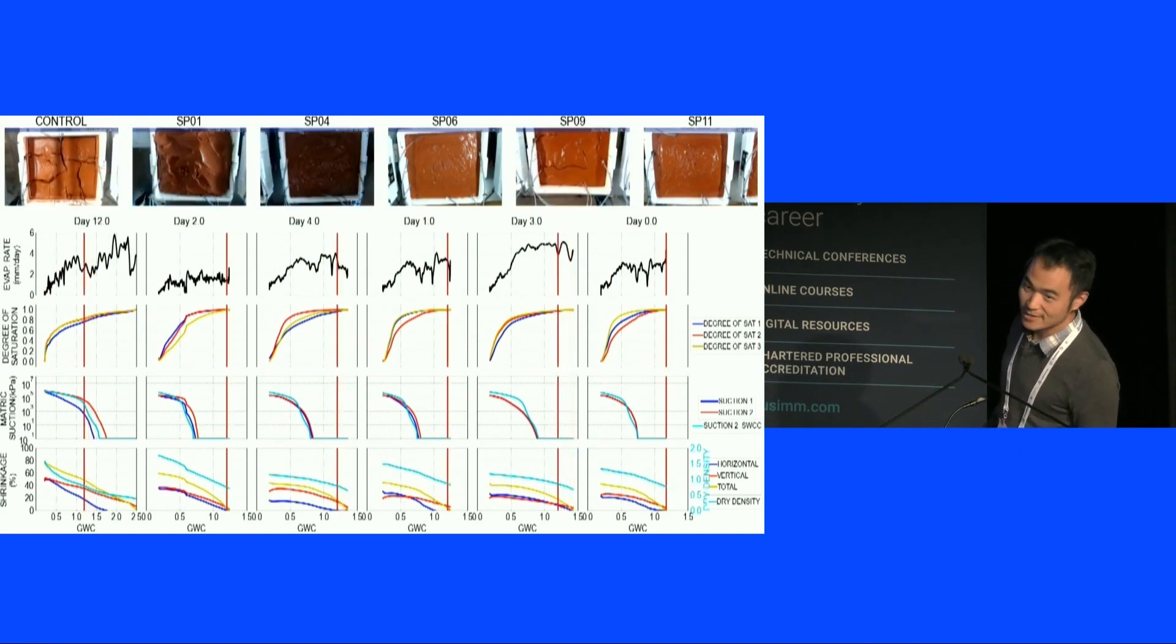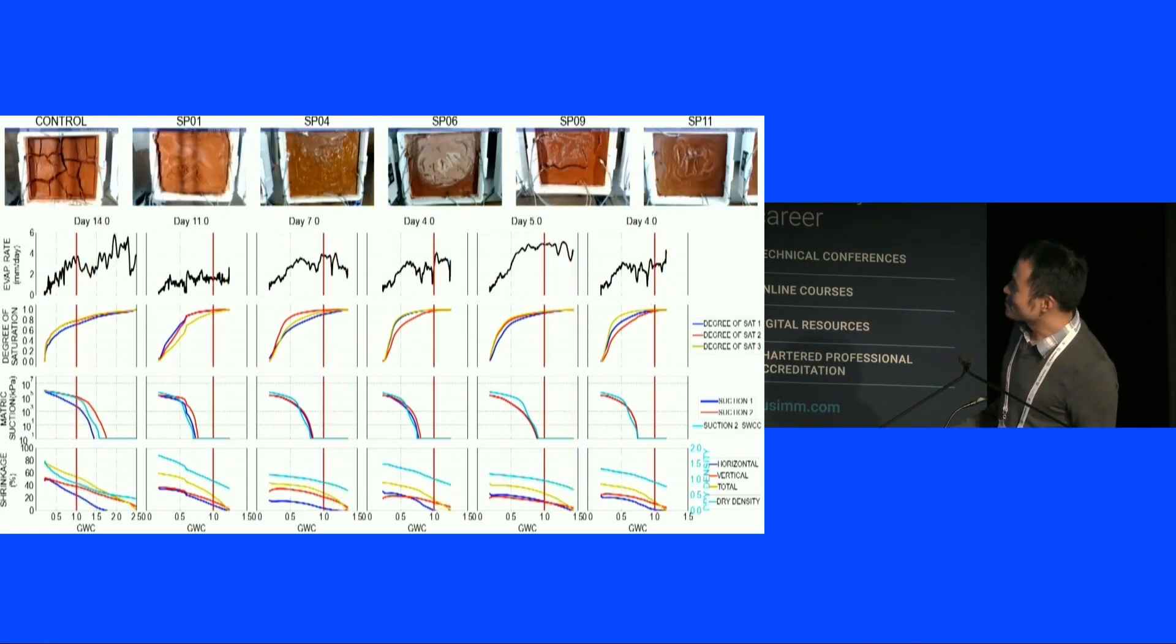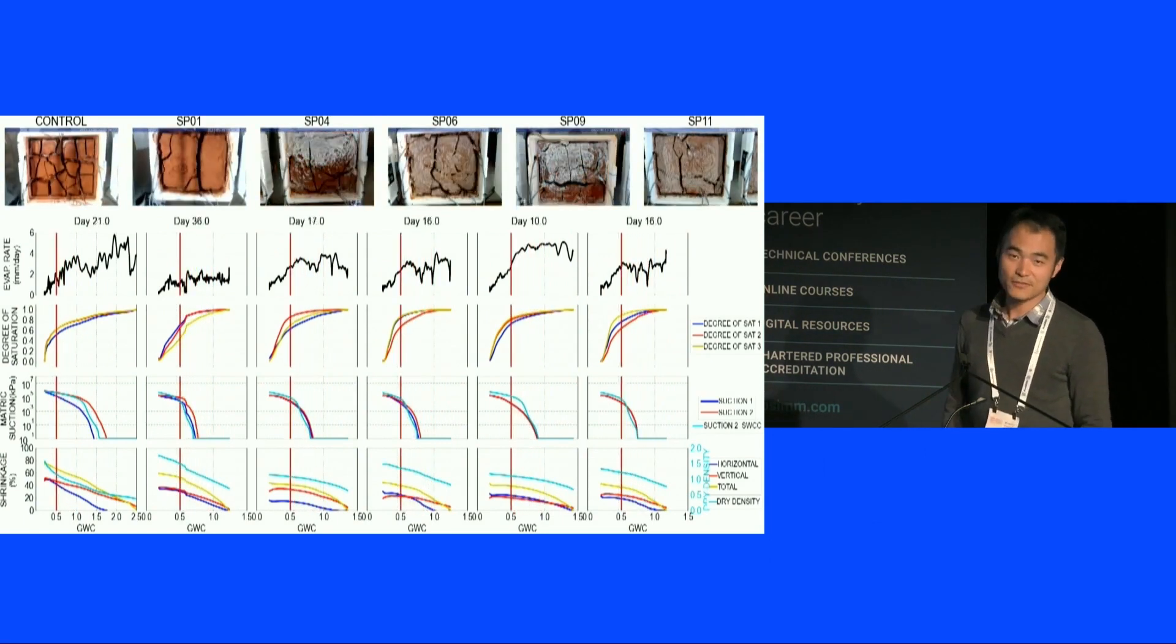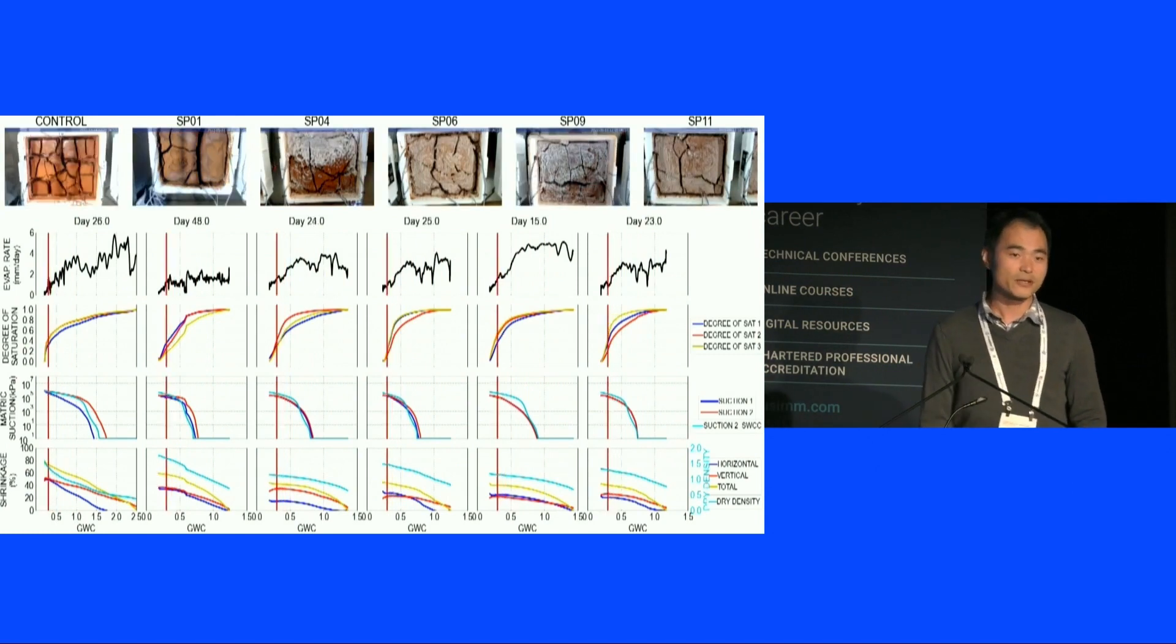We also used optical methods to identify how much settlement or shrinkage is taking place. This vertical and horizontal variation identifies that the total density after completely dry comes up to 1.5 tons per cubic meter. If we compare the control with the rest of the samples, just look at the pattern. Are they similar? Yes, they are very similar as well. Using this basin test still doesn't tell the differences.